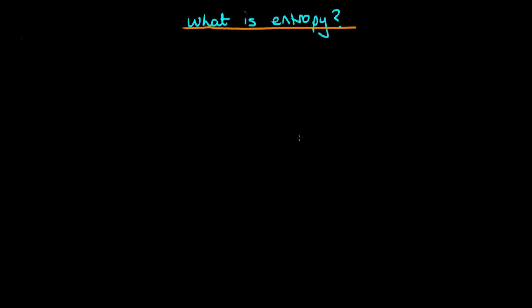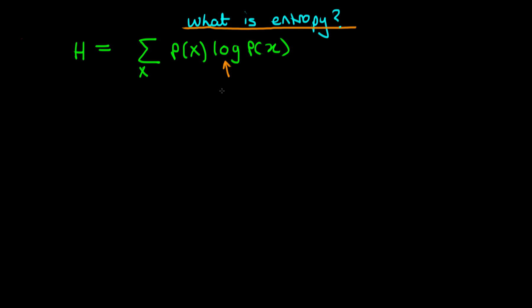In this video I'm going to explain what's meant by entropy — specifically the information-theoretic concept of entropy rather than that coming from thermodynamics or statistical mechanics, although these concepts are related. The mathematical form of entropy, which we often denote by H, is given for a discrete random variable as the sum over all potential x values of p(x) times log p(x), where p(x) is some probability distribution. The log is often taken to base 2 for discrete random variables, although using the natural log doesn't really change anything.